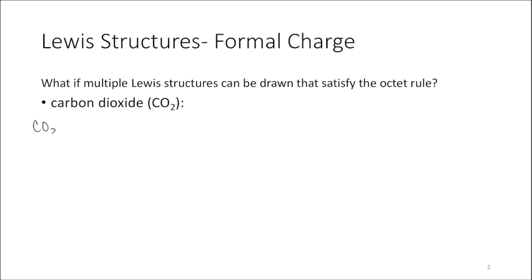If I'm drawing the Lewis structure for carbon dioxide, my Lewis structure is going to need to have four valence electrons from carbon and six valence electrons for each oxygen. Remember that you can determine the number of valence electrons for atoms of a given element from your periodic table based on the group number, and so our Lewis structure for carbon dioxide is going to have 16 valence electrons.